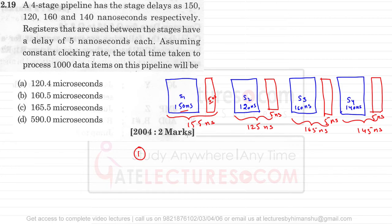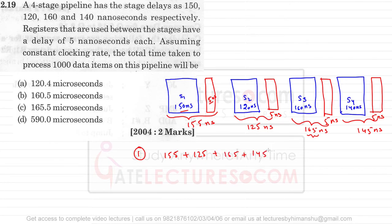When we use a pipeline, the first instruction utilizes the entire pipeline time, but all other instructions come in after every cycle. The cycle time is determined by the maximum stage delay, which here is 165 nanoseconds. So the first instruction comes out after 155 + 125 + 165 + 145 nanoseconds, and all the remaining n−1 instructions each take 165 nanoseconds because that is the maximum stage delay.